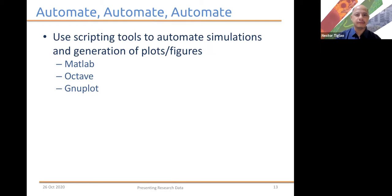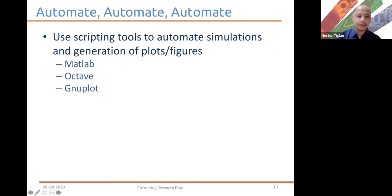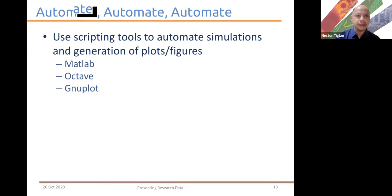In terms of automating, you use the scripting tools to generate your plots and your figures. Different programs for simulations and for generating graphs have different kinds of scripting language. For example, MATLAB and Octave are used for mathematical simulations and computing. MATLAB is the proprietary software, Octave is the open source equivalent, and Gnuplot is the image generation software, also open source. What I'll show you is how I used MATLAB to generate the figures in EPS format that were used in the conference paper.